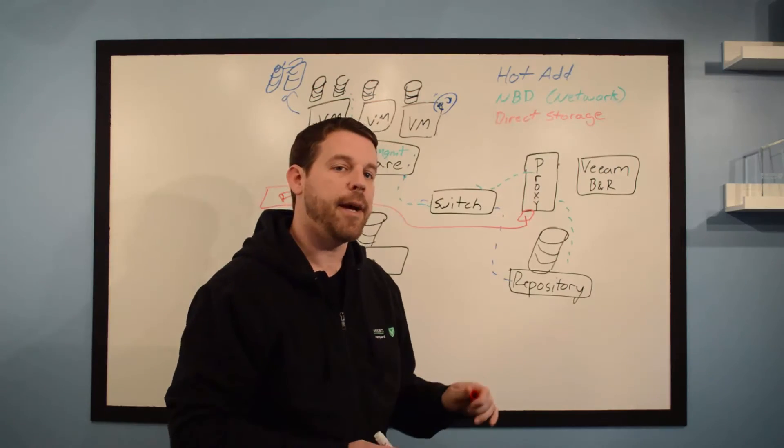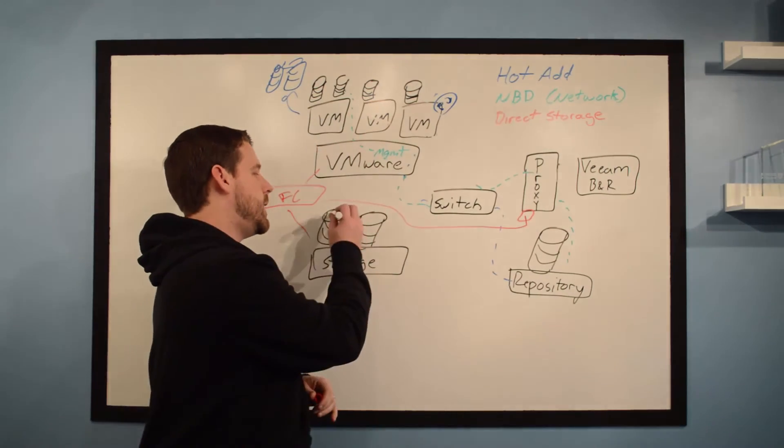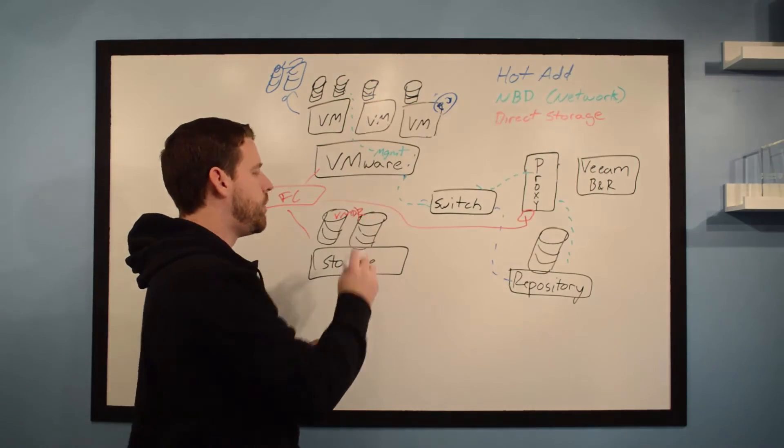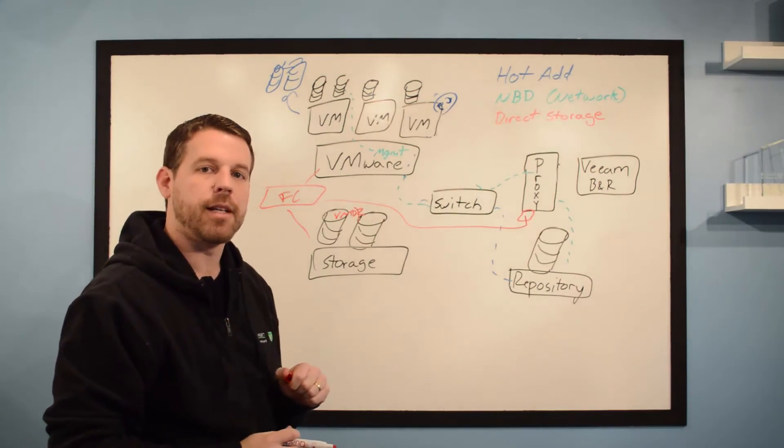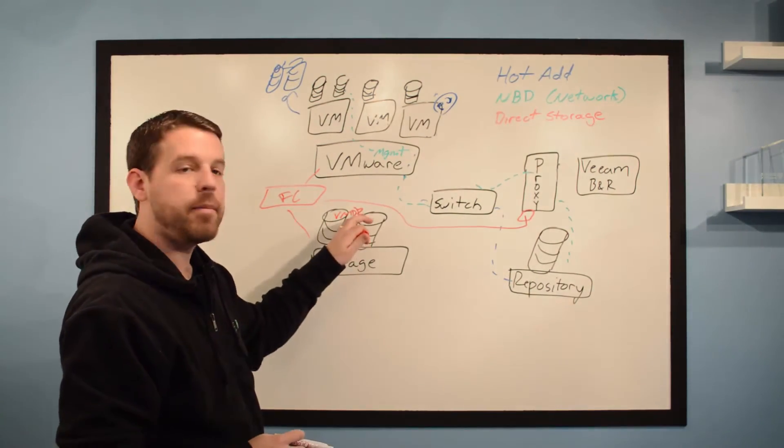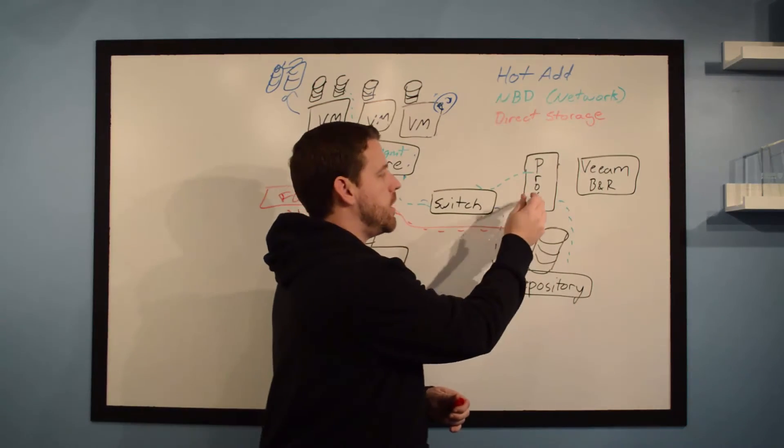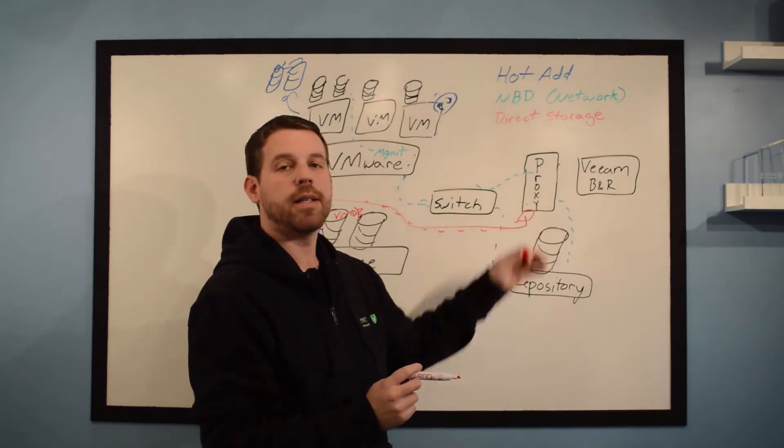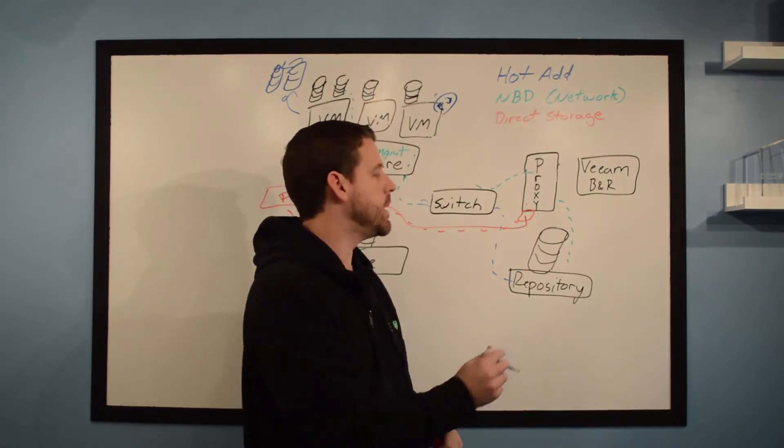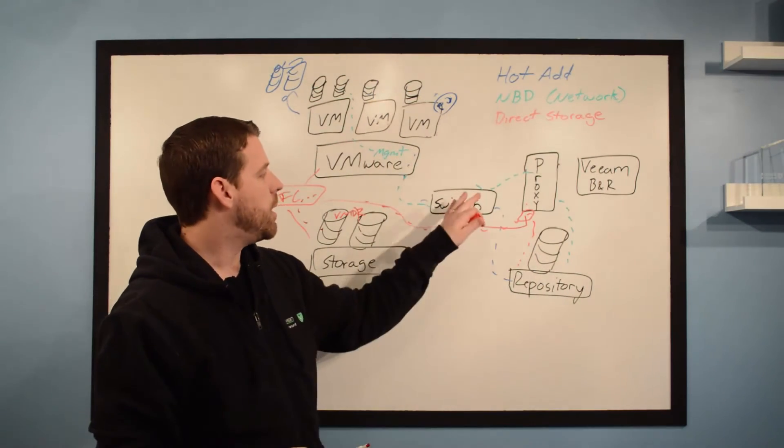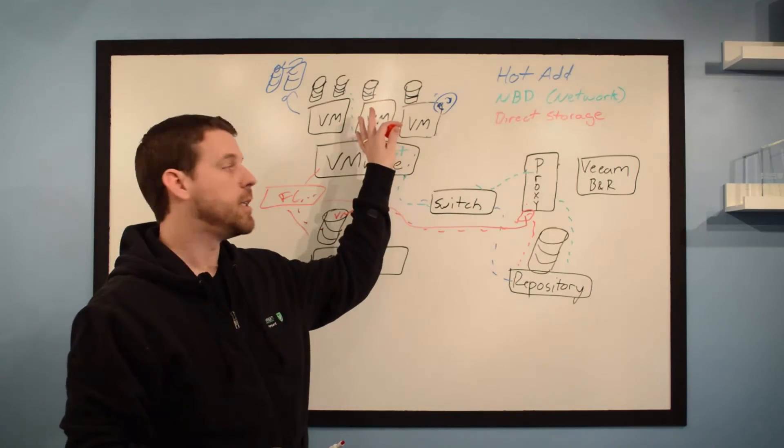Veeam is smart enough to realize, hey, those VMDKs are sitting down here on storage. Why don't I just grab them directly from there? So we grab that VMDK from the storage, take it through the Fiber Channel network to the proxy. That proxy is going to deduplicate and compress it and then send it down to the repository. No network traffic, no load on the management server.